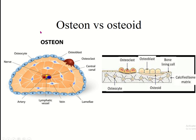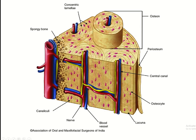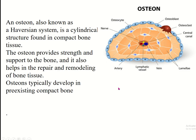The first term is osteone and osteoid. There are two types of bone present in our skeletal system: compact bone and spongy bone. Compact bone is formed by some cylindrical units which are present longitudinally. Each unit is known as the osteone, also known as the Haversian system.